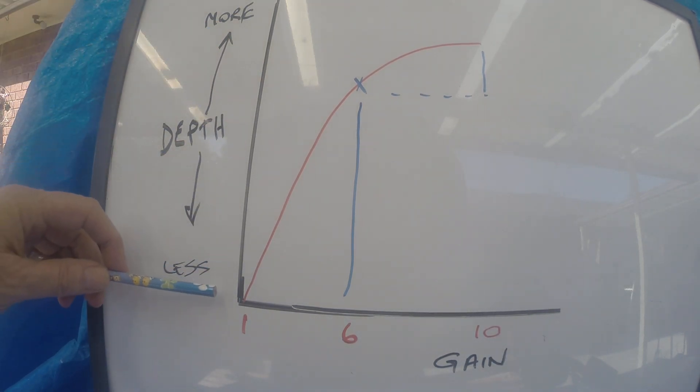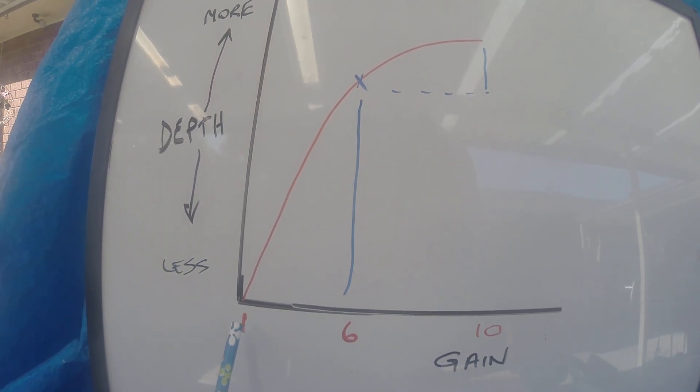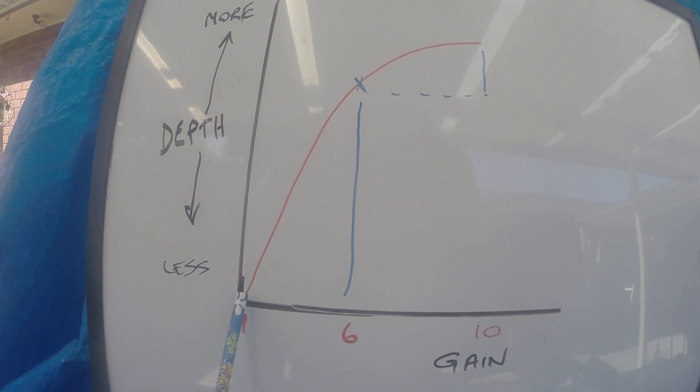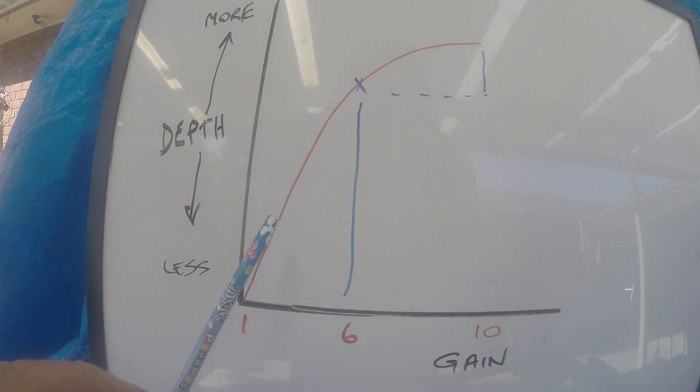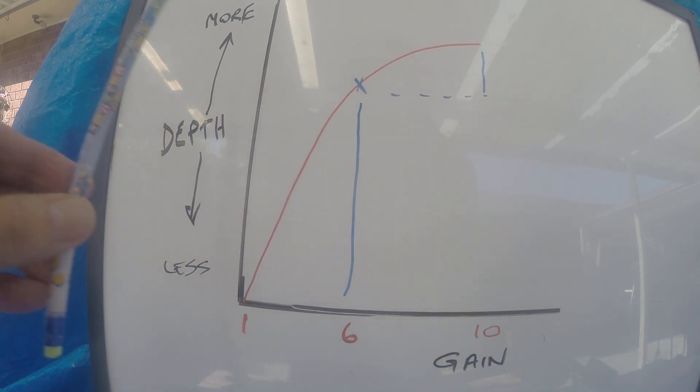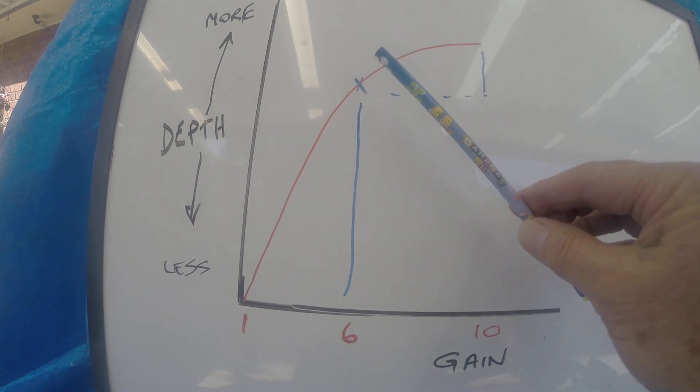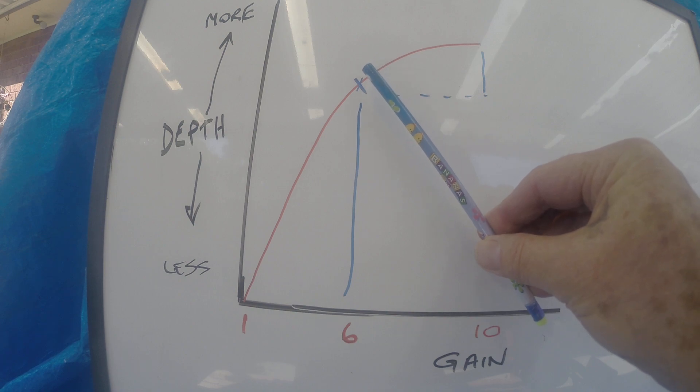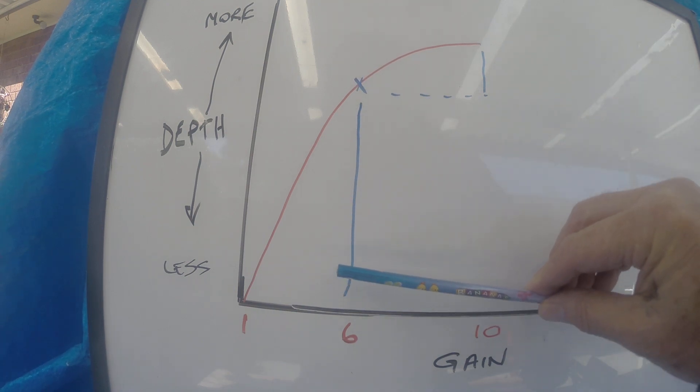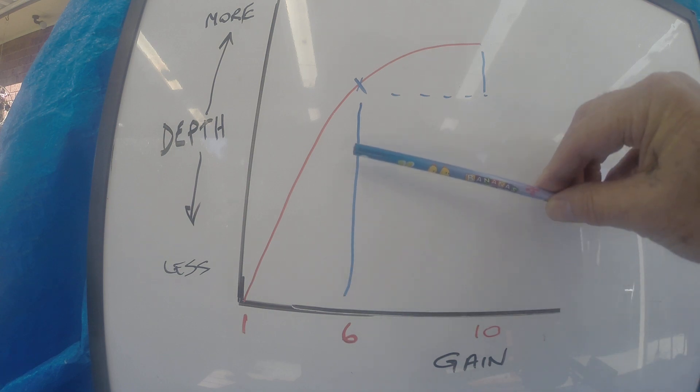Less depth, more depth. Now with the QED, gain of 1 will give you a certain depth. Gain of 6 is almost a straight line going up - 1, 2, 3, 4, 5, 6 to here. And then from 6 to 10 it actually drops off in performance, so you can see between 1 and 6 gives you huge gain increase.